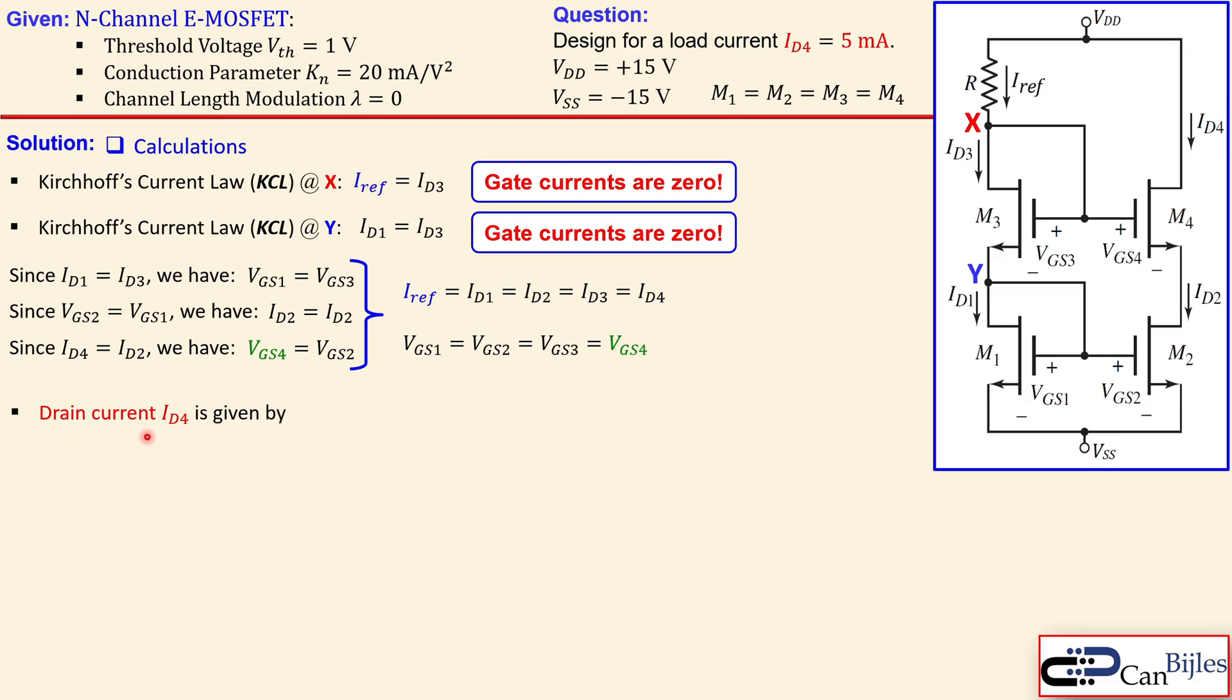Now the drain current, which is our load current ID4, is given by this expression. You see here the KN and also the VGS4 and also the threshold voltage specifically. And also that we don't have the channel length modulation, so there is no parameter here for the channel length modulation. Now when you calculate VGS4 here, just rewrite this expression, you get this. And if you substitute the values for KN and ID4 and the threshold voltage, you have two solutions.